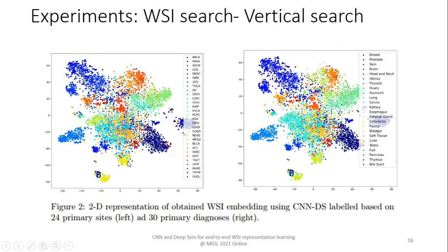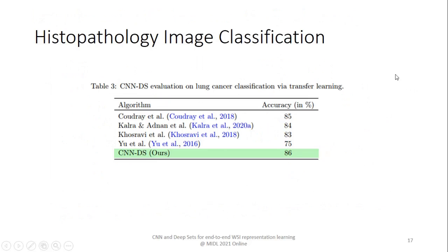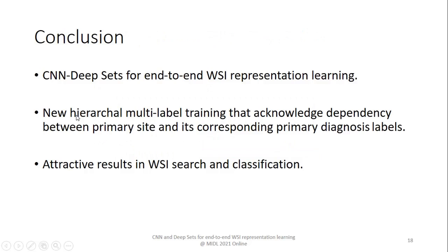Here are the two-dimensional embeddings based on primary site and primary diagnosis labels, where each point represents a WSI. We also performed WSI classification, and as you can see, our method achieves competitive results compared with recently developed methods for lung data classification.